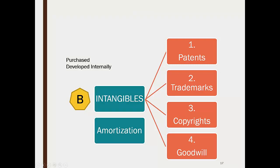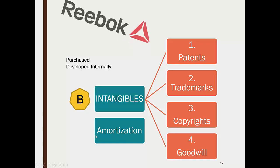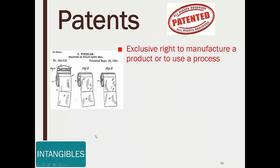Now we move on to intangibles. These are the major categories we covered earlier — patents, trademarks, copyrights, goodwill, and franchises — and we're going to amortize those. So, what is a patent?